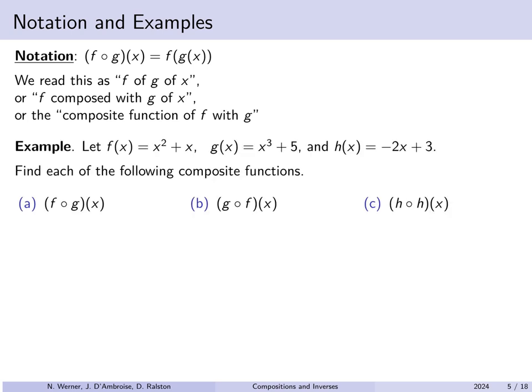For example, suppose f(x) is x squared plus x, g(x) is x cubed plus 5, and h(x) is negative 2x plus 3. We can find the following composite functions: f of g of x, g of f of x, and h of h of x. Note there's no reason you cannot compose a function with itself.